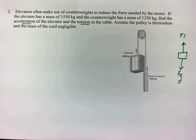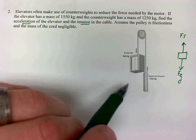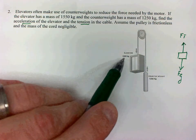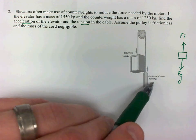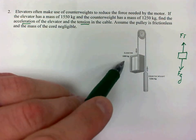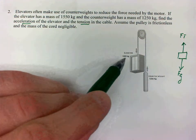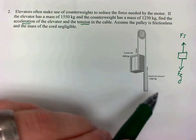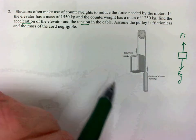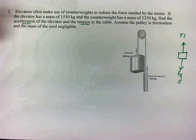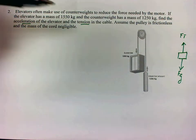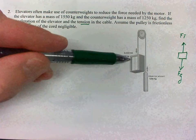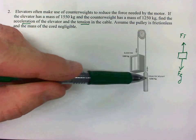We have to analyze what's going to happen. Looking at the masses given, we have the mass of the elevator and the mass of the counterweight. The mass of the elevator is greater, which means FG for the elevator is going to be greater than FG for the counterweight. So right away we can see the elevator is going to go down and the counterweight is going to go up.